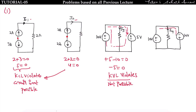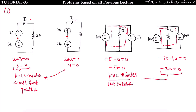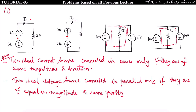We can conclude that two ideal current sources connected in series are only valid if they are of the same magnitude and same direction. Otherwise KCL violates and the circuit is not possible. Applying KVL gives minus 10 minus 10 equals 0, i.e., minus 20 equals 0 — again KVL violates.